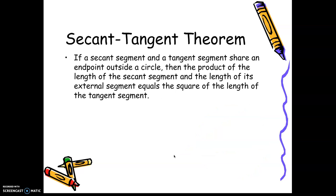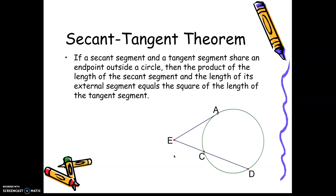Third, we have the secant-tangent theorem. That's when you have a secant and a tangent that just comes to the edge of the circle. EA is your tangent, ED is your secant. You're going to square the tangent — EA times itself — and that equals the part of the secant on the outside times the whole thing. So EC times ED, just like the last theorem, but the tangent part is multiplied times itself.